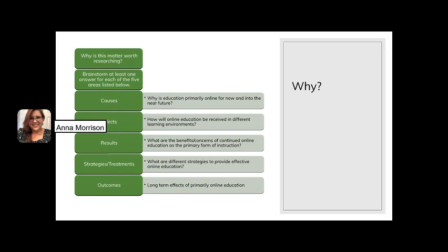Now we've come to the most important question: Why? Why is this matter worth researching? What's going on behind the scenes with this topic? There are five different categories and you need to brainstorm at least one answer for each of the five areas. Using education as my example: Causes — why is education primarily online for now and into the near future? Don't answer your question, just put the question there. Effects — how will online education be received in different learning environments? Results — what are the benefits or concerns of continued online education as a primary form of instruction? Strategies or treatments — what are different strategies to provide effective online education? And outcomes — long-term effects of primarily online education. Your turn — one of each.